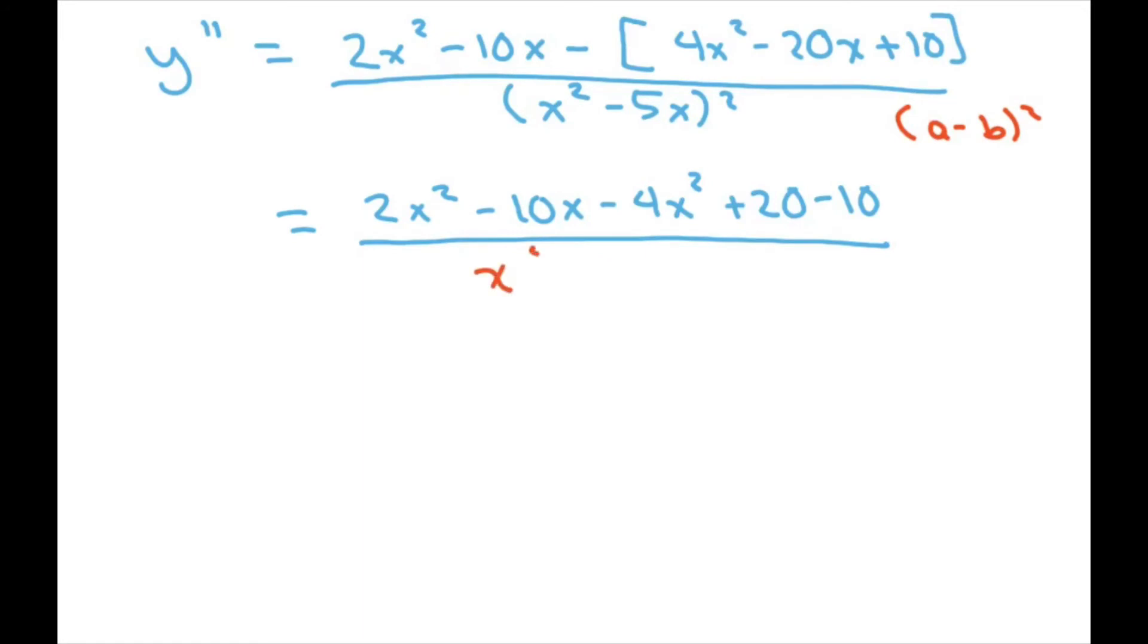So that's going to be x to the 4th minus 2ab, which is going to be 10x cubed, and then square the last part. So that's going to be plus 25x squared.